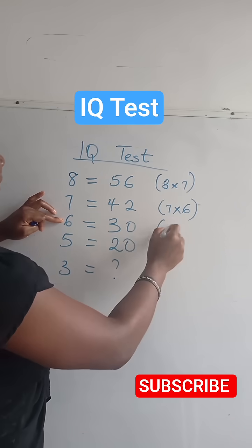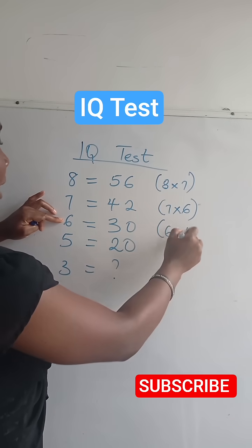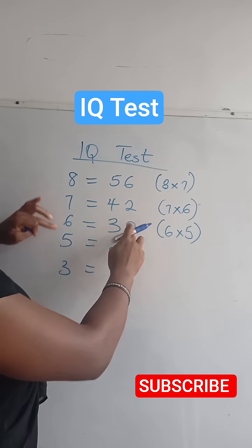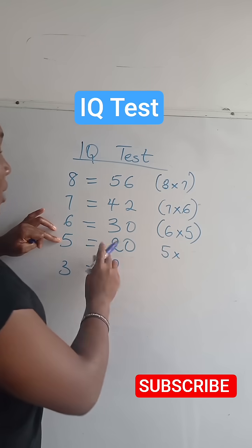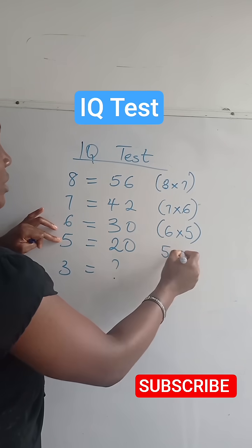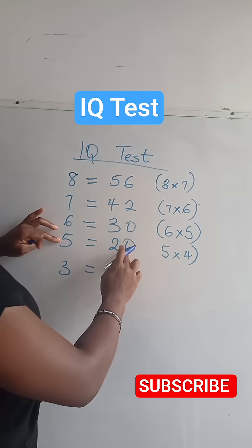6, you count down which is 5, that will give us 30. And 5, 5 times what gives us, when you go backwards, you have 5 times 4, that gives us 20.